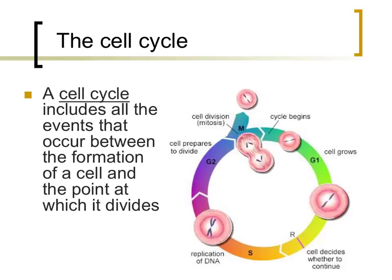The life cycle of the cell, or the cell cycle, includes all the events that occur between the time that a cell forms and the time that a cell divides and forms another cell. While this process might sound simple, it is actually very complex. There are countless steps that must take place before, during, and after the division of a cell. These steps will be described in detail later in this unit.